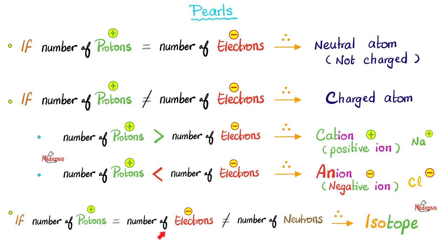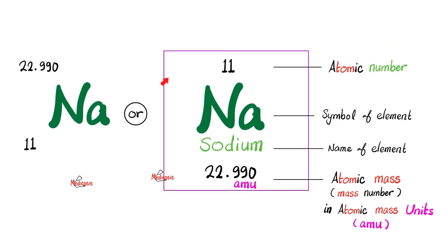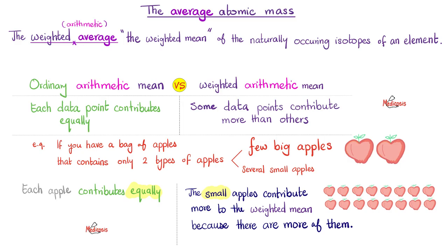What if the protons and electrons are equal, but the number of protons is not the same as the number of neutrons? That's an isotope. By now you should understand everything. But why is the atomic mass not a whole number? Because it's a weighted average — a weighted arithmetic mean. What's the weighted mean? We'll talk about this right now.